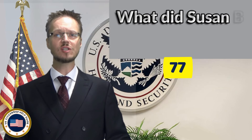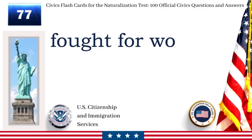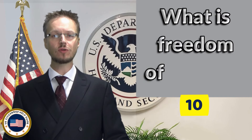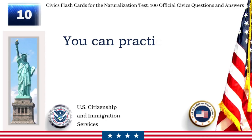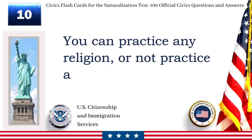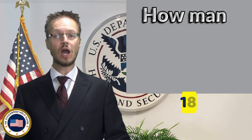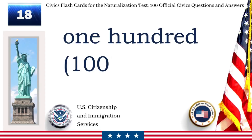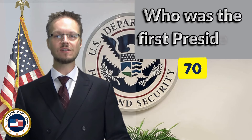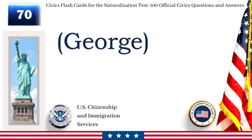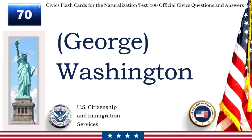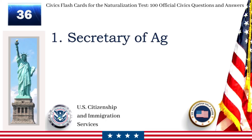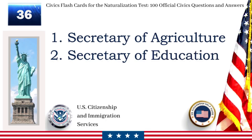What did Susan B. Anthony do? Fought for women's rights. What is freedom of religion? You can practice any religion or not practice a religion. How many U.S. senators are there? One hundred. Who was the first president? George Washington. What are two cabinet-level positions? Secretary of Agriculture. Secretary of Education.